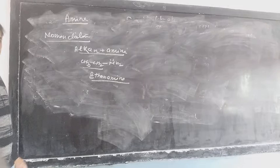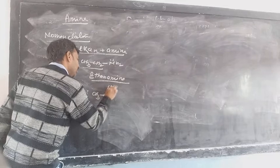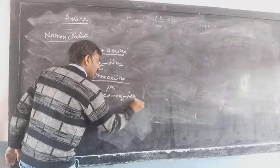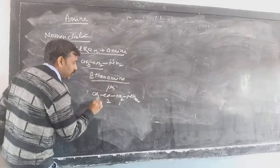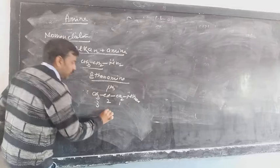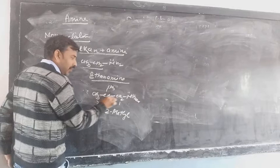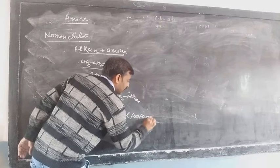If the compound is CH3-CH(CH3)-CH2-NH2, when you start the numbering: 1, 2, 3 — on position number 2 there is a methyl group. So it is 2-methyl, and it is a 3-carbon system, that is propane, plus amine. This is the 2-methylpropanamine.